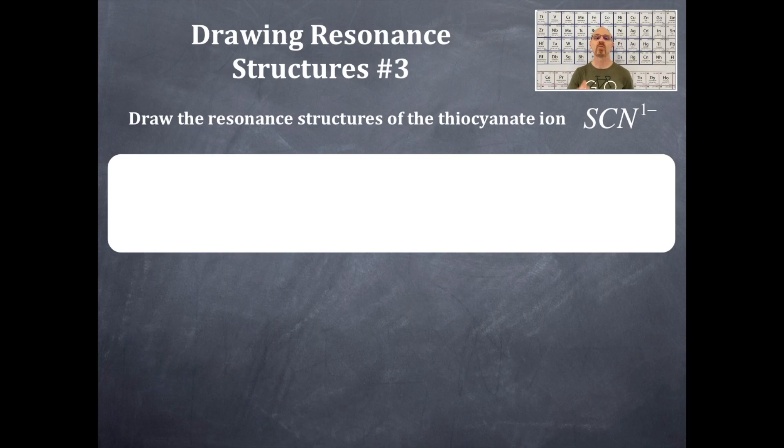Let's draw one of the three different resonance structures for the thiocyanate ion. Here it is, right here. Notice that I do have the brackets on this and the minus one charge to indicate that this is an ion and it does have a charge.